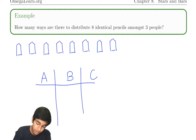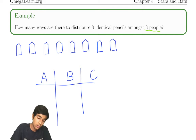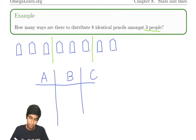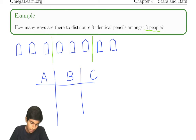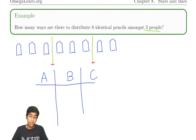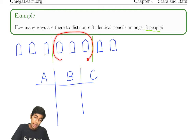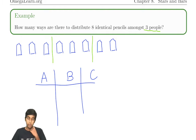The key idea here is that because we're dividing amongst three people, what we can do is draw two bars. When we draw two bars, the pencils are separated into three regions: the region to the left of the first bar, the region in between both bars, and the region to the right of the second bar.